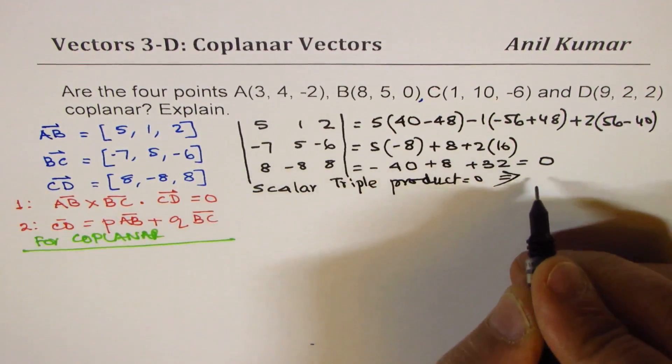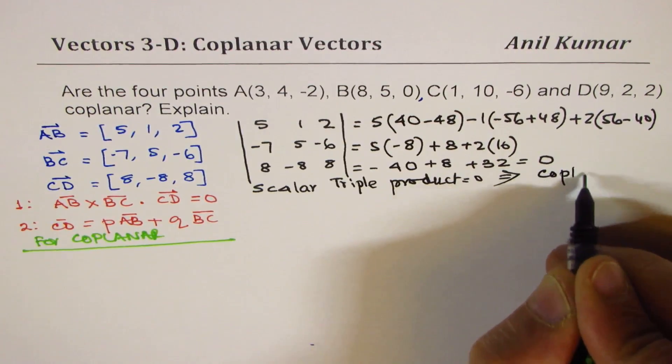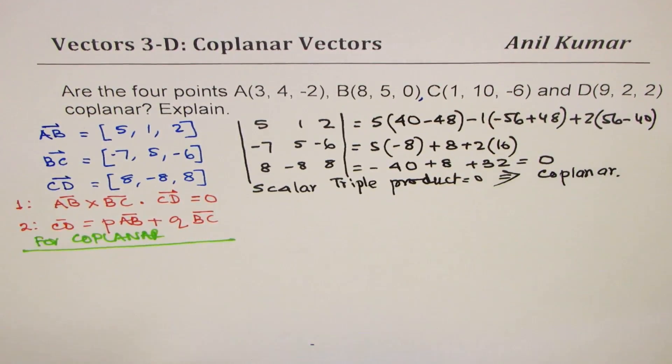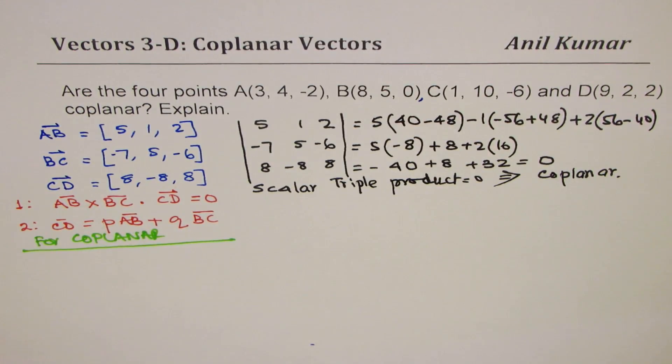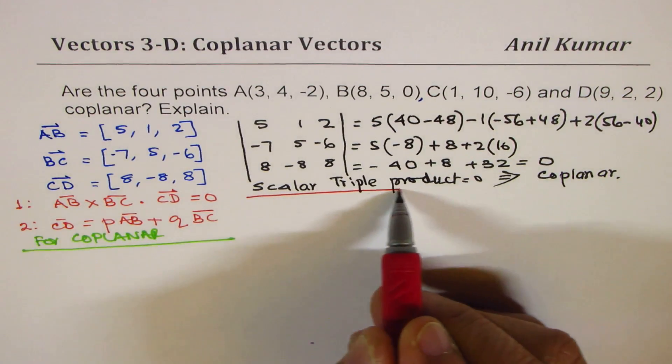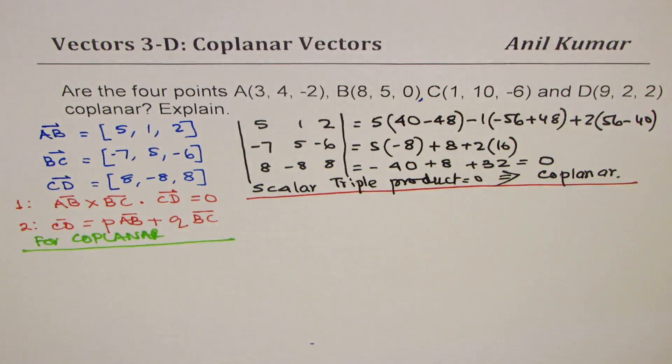Since scalar triple product equals 0, that means they are coplanar. So that is one way of doing it. Now, sometimes you may be asked to write one vector in terms of the other to show that it could be written as a linear combination. So let me do that also.